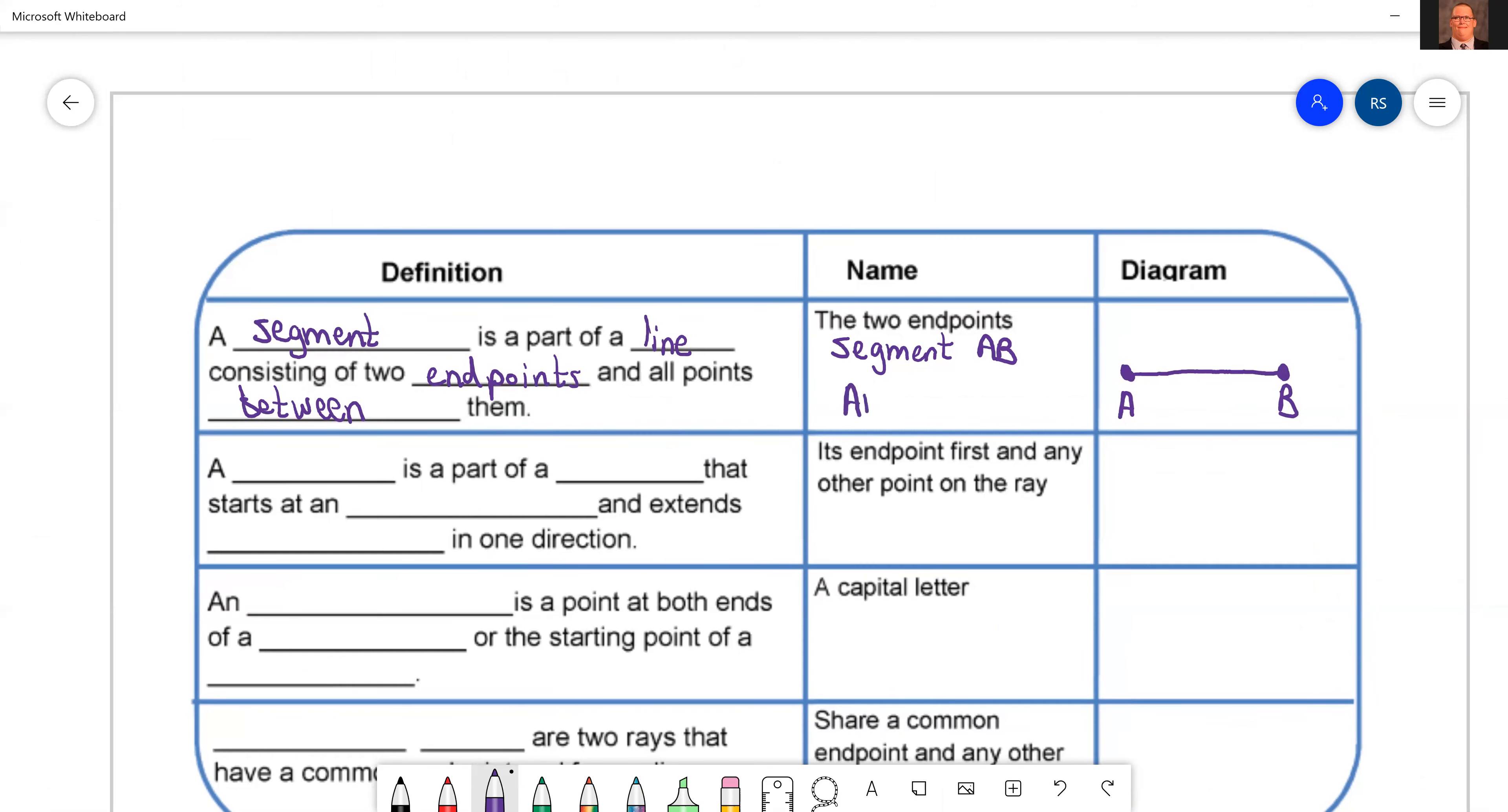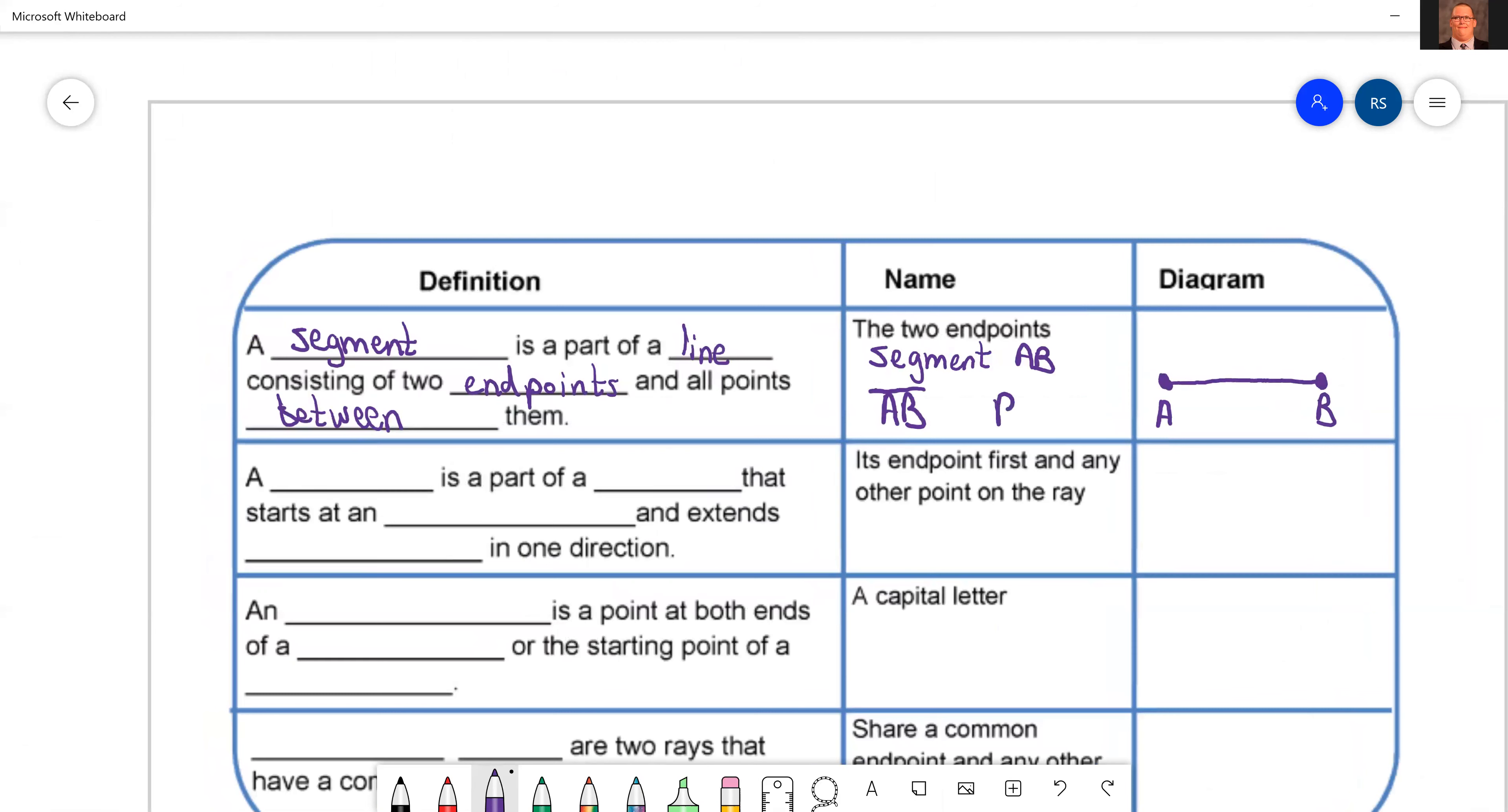That's why I said it's important to know which one you're talking about. A segment does not have arrows because it stops. A line has arrows because it goes on forever. So you could say AB or you could also say BA. Okay, so that's a segment.